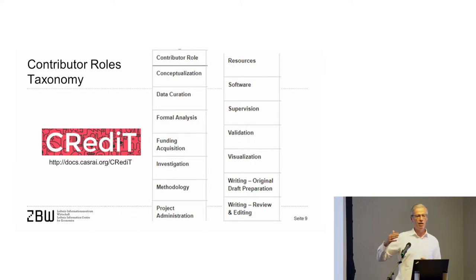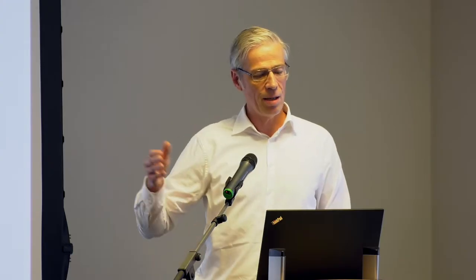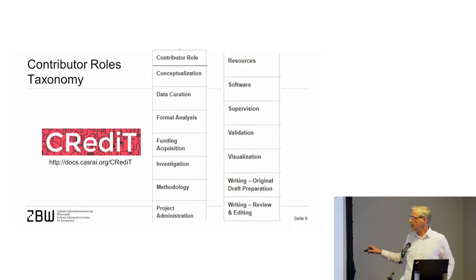The CRediT system is a taxonomy for contributor roles. The idea is to increase transparency in science. If we have publications these days, we have all the authors listed — maybe in alphabetical order, maybe the professor first or last — but you do not really see in which role each author contributed to a specific publication. The CRediT system defines a taxonomy identifying different roles a scientist can have when it comes to the publication of a paper. For example, the scientist could be responsible for funding acquisition — then they are mentioned with this role. Another person might be responsible for the methodology.